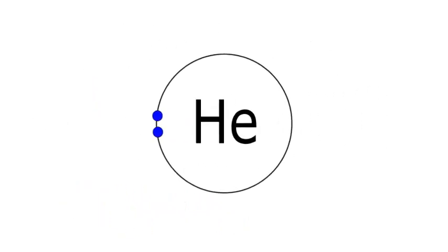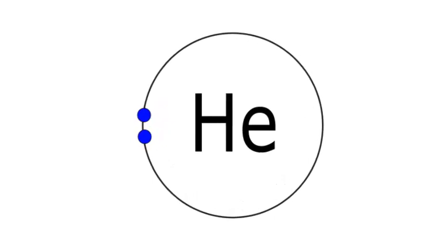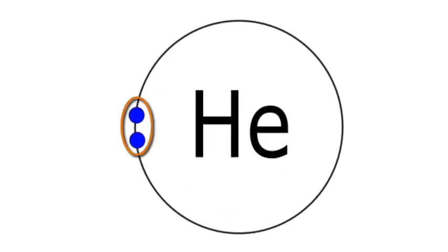We might say that by bonding with another atom, hydrogen is similar to the electronic configuration of helium, which has two valence electrons in its outer shell. Helium is a noble gas, and it's very stable. It doesn't bond with anything.